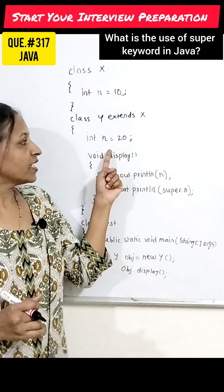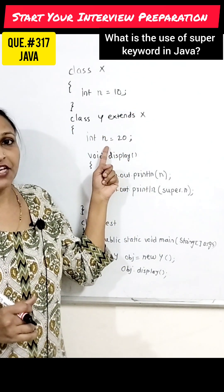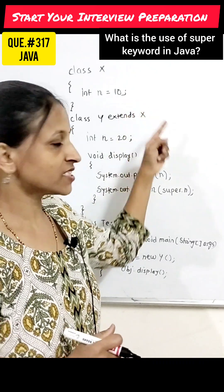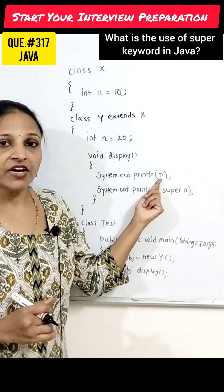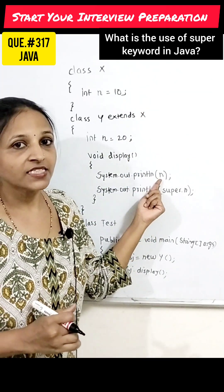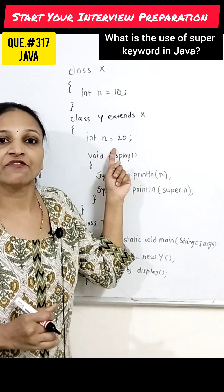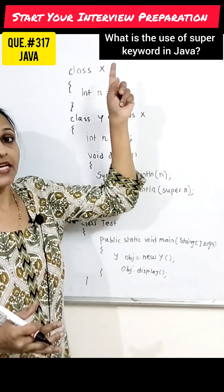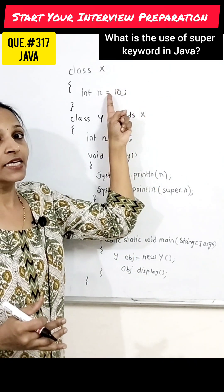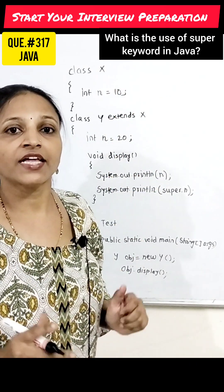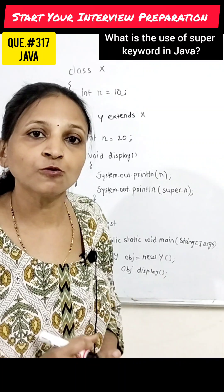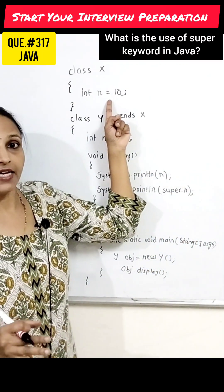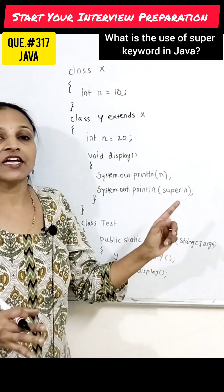Inside class y, there is also a variable n declared. Class y is a derived class of class x. In the display method of class y, whenever we try to access n, preference will be given to the local n. If you want to access the base class n, use super.n — then that n will be accessed and value 10 will be displayed.